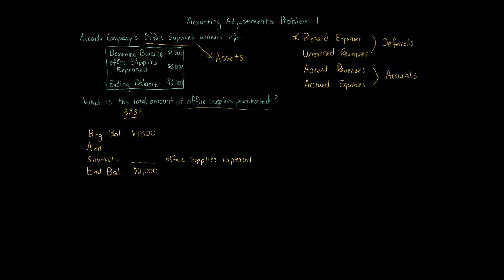At the end of the accounting period — whether a month, week, quarter, or year — you do a physical count. Our beginning balance is $1,300, ending balance is $2,000. We know $5,000 worth of paper was used during the period. At some point, you had to purchase office supplies, and that's what the 'A' (add) represents — that's what we're solving for. The expense of $5,000 is the subtract.